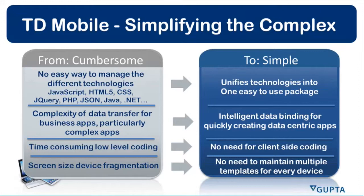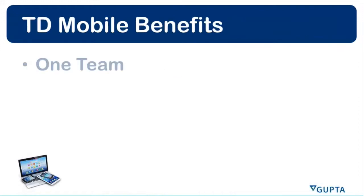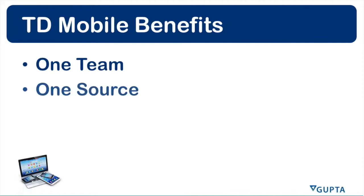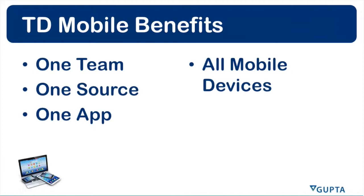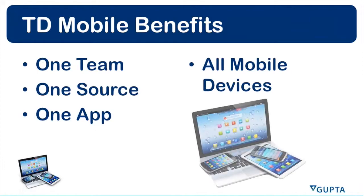With traditional applications, you need to take care of screen size and device fragmentation. With TD Mobile, you don't need to do that. You don't need to maintain multiple templates for every device and generate device-specific code. With TD Mobile, you can use one development team. For one application, you have one source code file that results in one application that will run on all your mobile devices — smartphones, tablets, laptops, and even desktop computers. One source code for all mobile platforms.